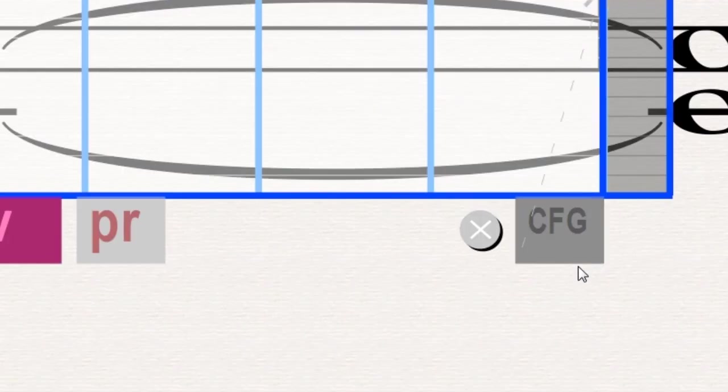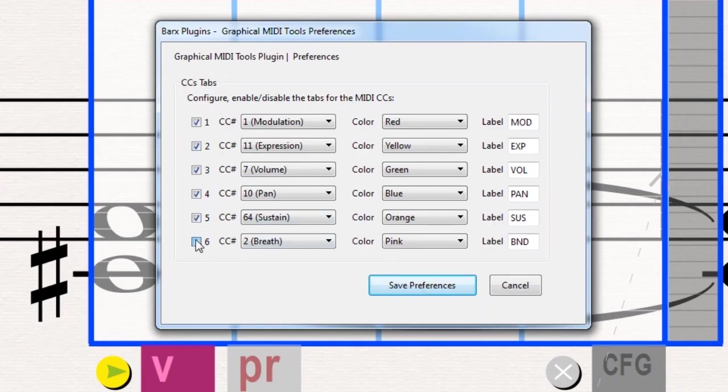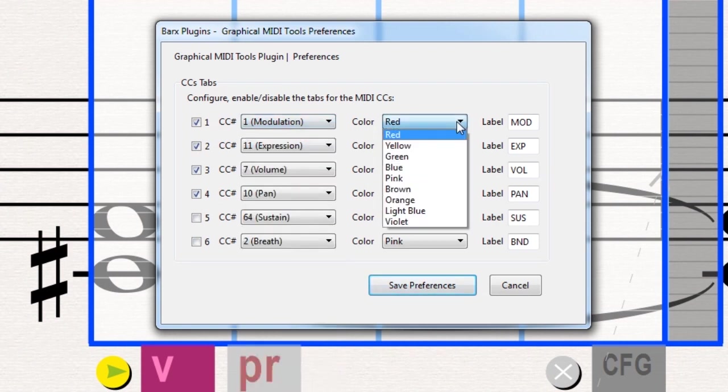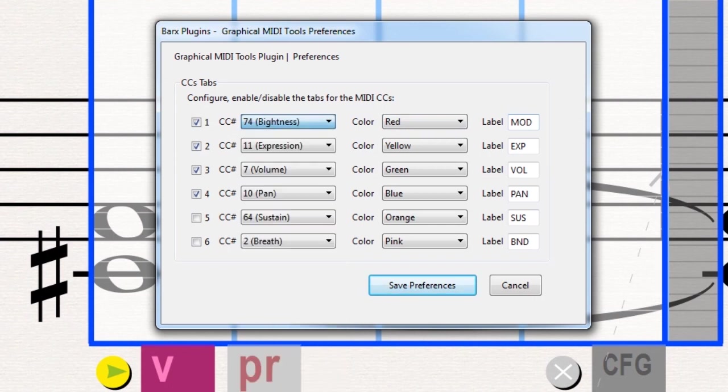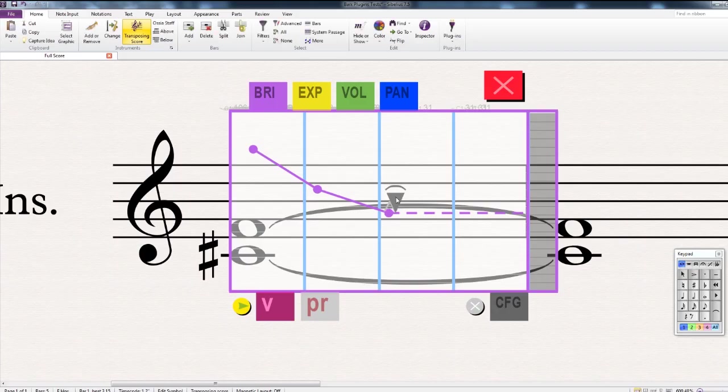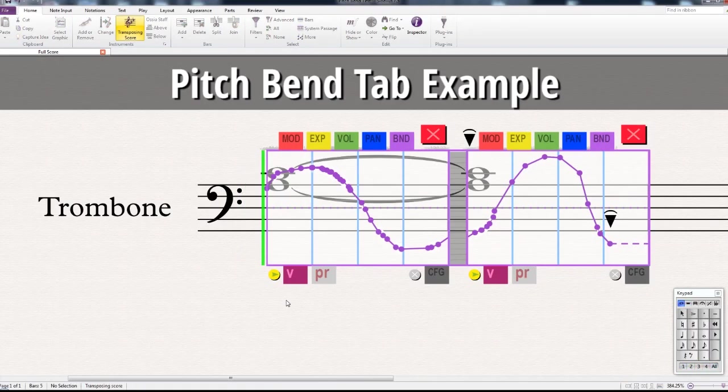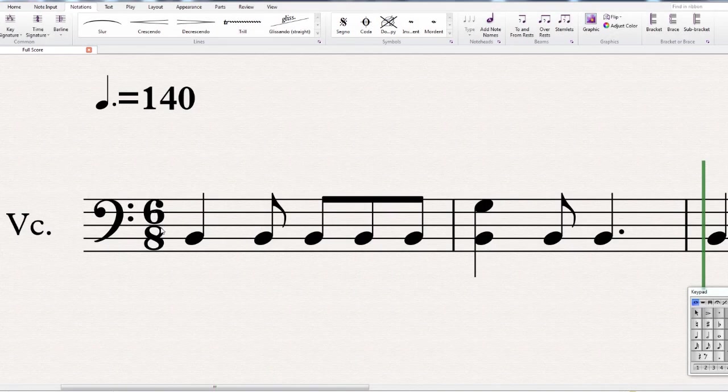As you can see, up to 6 tabs can be activated at the same time. You can choose which MIDI controller each tab handles. You can also select a color for the tab and even the label it will have. For example, let's say we would like to change the first one for the brightness control number 74 and to put it in a violet color and label it BRI. We save the preferences and the changes are reflected. As another example, let's try the pitch bend.